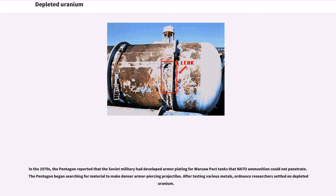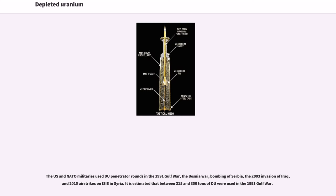In the 1970s, the Pentagon reported that the Soviet military had developed armor plating for Warsaw Pact tanks that NATO ammunition could not penetrate. The Pentagon began searching for material to make denser armor-piercing projectiles. After testing various metals, ordnance researchers settled on depleted uranium. The U.S. and NATO militaries used DU penetrator rounds in the 1991 Gulf War, the Bosnia War, bombing of Serbia, the 2003 invasion of Iraq, and 2015 airstrikes on ISIS in Syria.